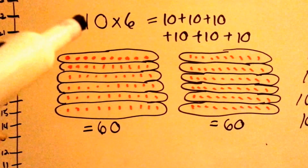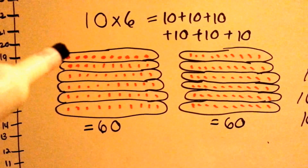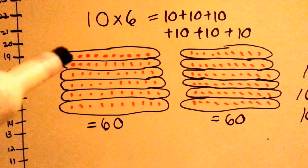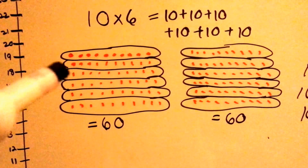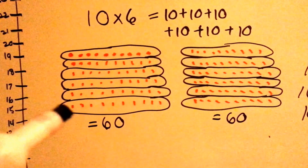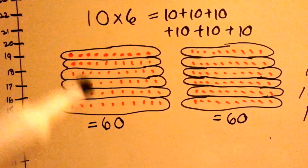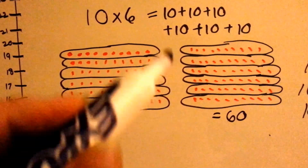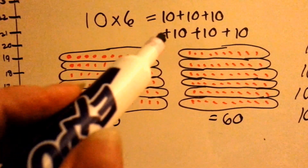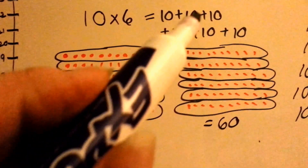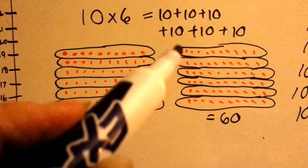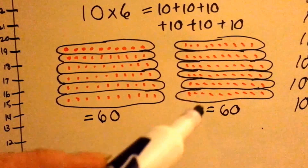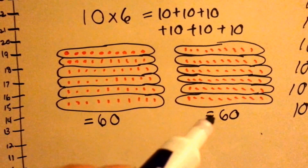10 times 6 means we have a 10 six times: 1, 2, 3, 4, 5, 6. 10 times 6 is 60. It's the same thing as saying 10 plus 10 plus 10 plus 10 plus 10 plus 10. That's also 60.